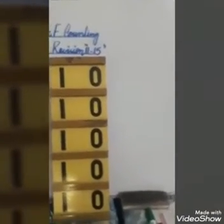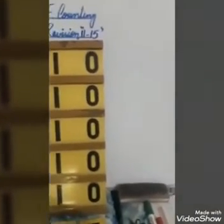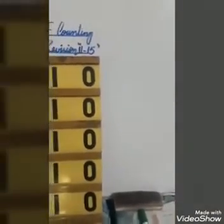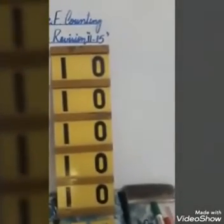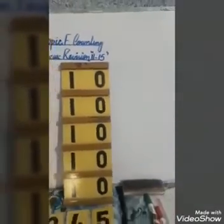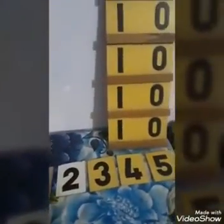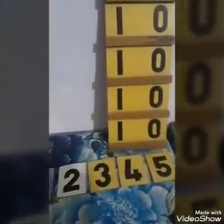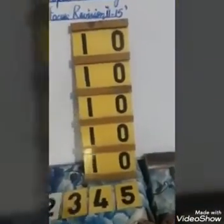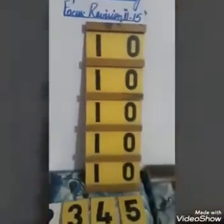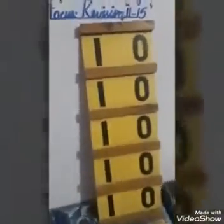First of all, we need to make the friend of 1. Then we can make the other numbers friends — number 2, then number 3, then number 4, then number 5 — and we can move on to hundreds, thousands, lakhs and so many more.